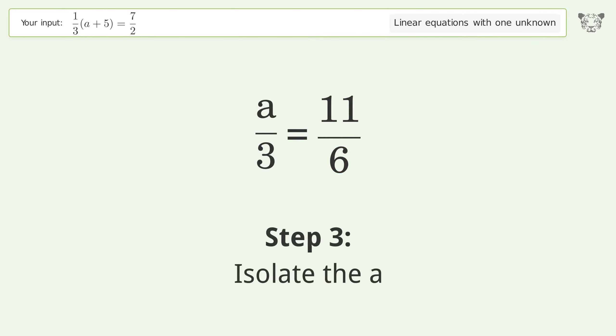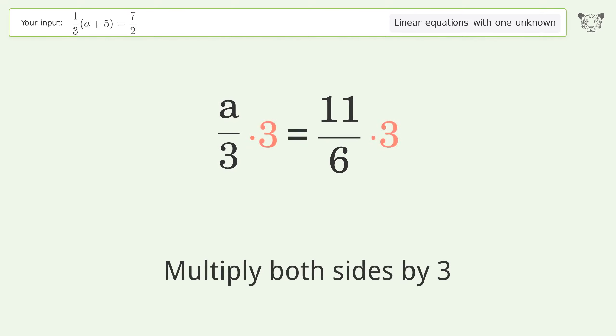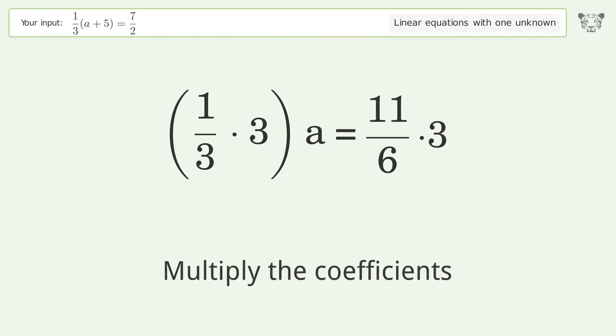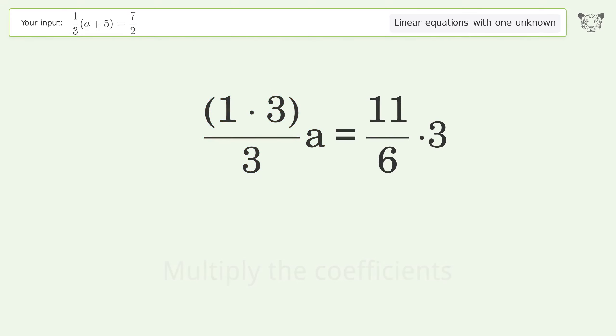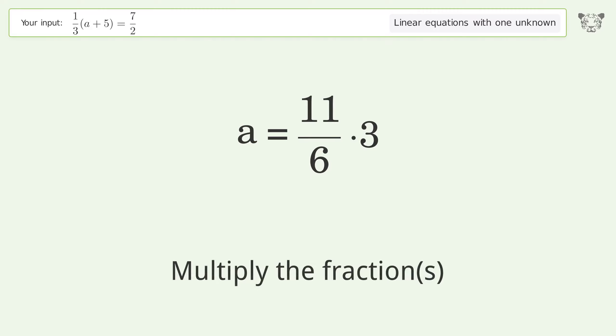Isolate the a. Multiply both sides by 3. Group like terms. Multiply the coefficients. Simplify the fraction. Multiply the fractions. Simplify the arithmetic.